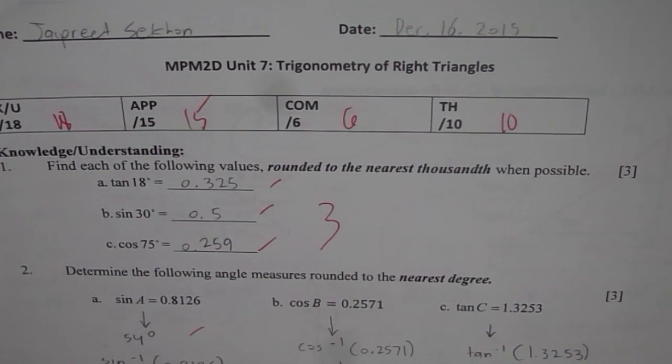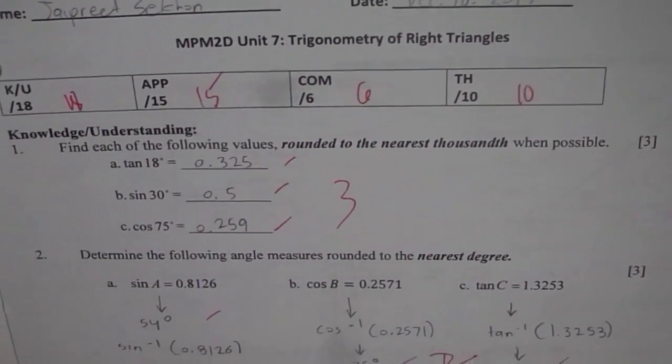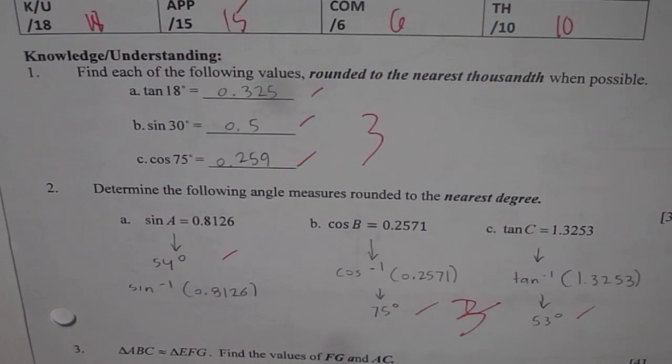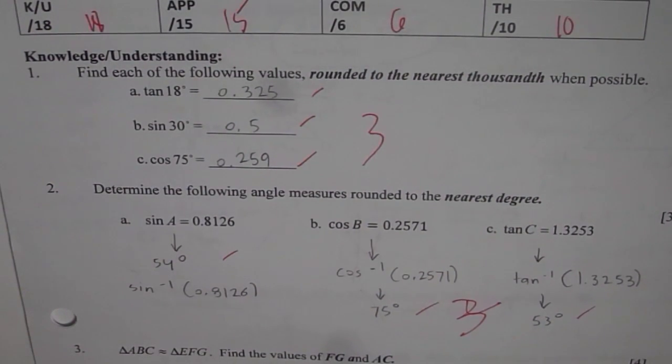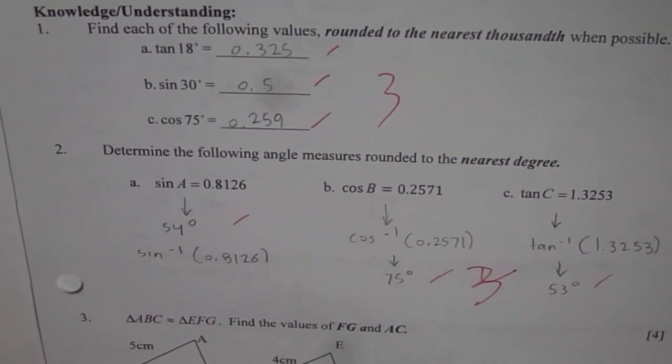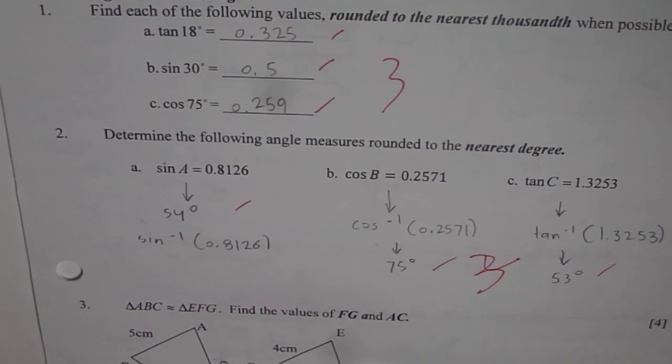These are all knowledge based questions. In the first set of questions you have to find using calculator the value of the trigonometric ratios and round them to the nearest thousandth. In the next set of questions you need to find the degree using inverse of trigonometric ratio.